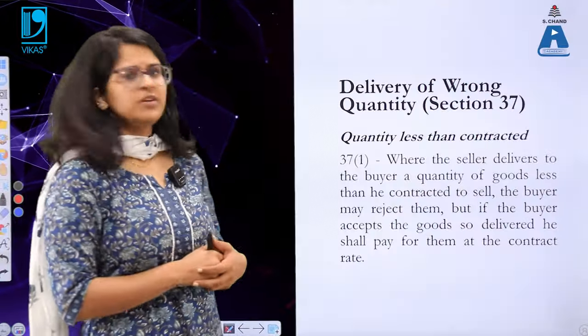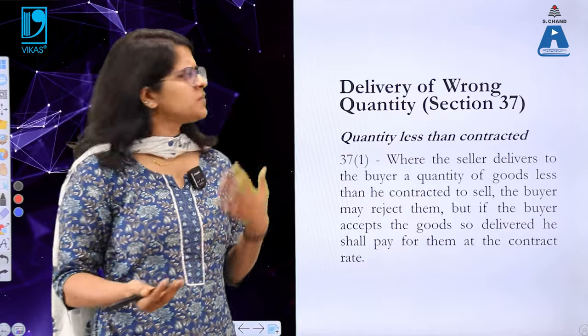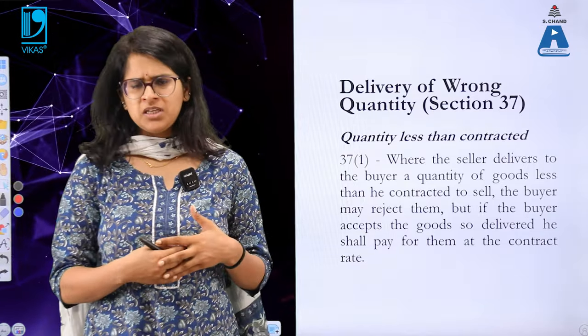Welcome back to S. Chant Academy. Before the break, we discussed how the performance of a contract of sale is supposed to be done — how it is the duty of the seller to deliver goods and the duty of the buyer to accept and pay. We also covered Section 36 and the rules with respect to how delivery is supposed to be made. Now let us discuss situations where delivery of a wrong quantity has been made.